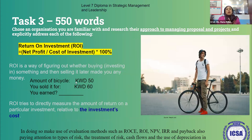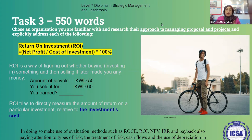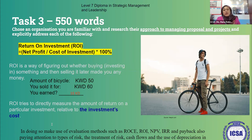Now let's look at Return on Investment (ROI). ROI focuses on your investments — for example, if I bought a bicycle at 50 KD and sold it for 60 KD, I earned 10 KD. ROI tries to directly measure the amount of return on a particular investment relative to the investment cost. To calculate ROI, you take net profit divided by the cost of investment.